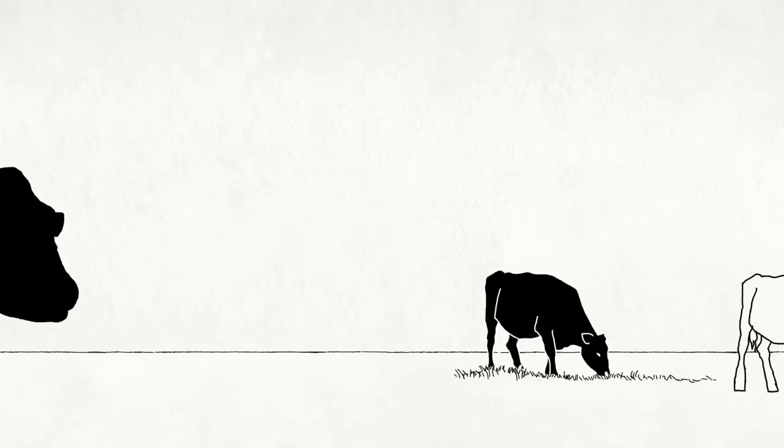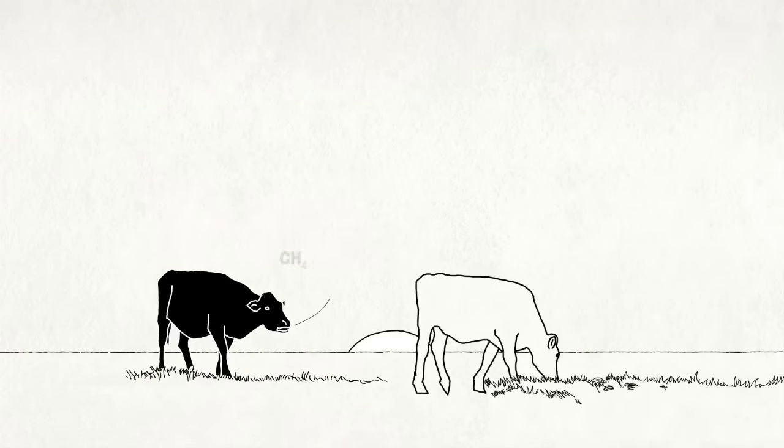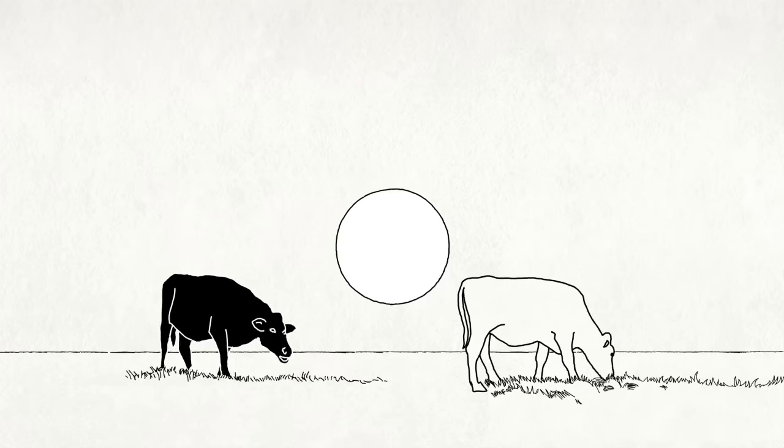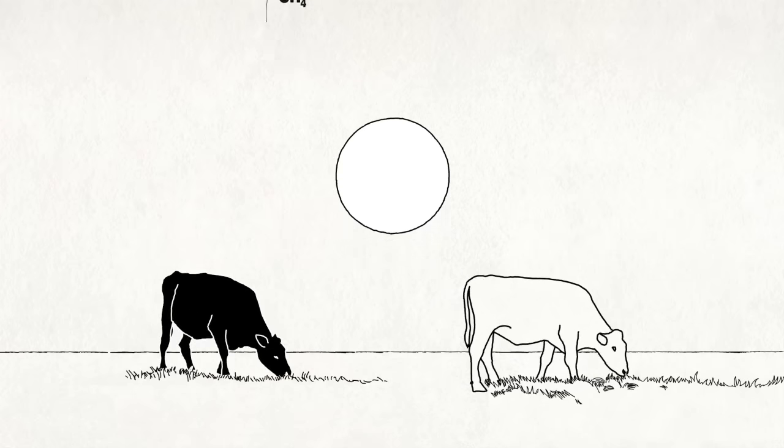However, these microorganisms also produce methane, a powerful greenhouse gas, and the more fibrous the ruminants' diets, the more methane is produced.